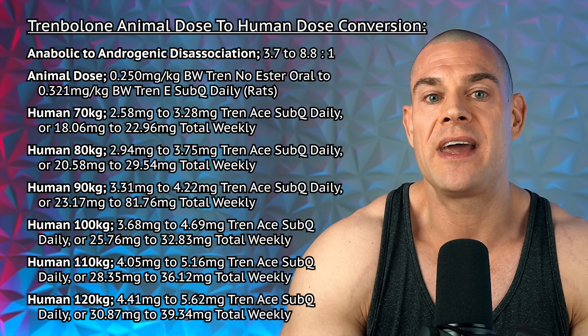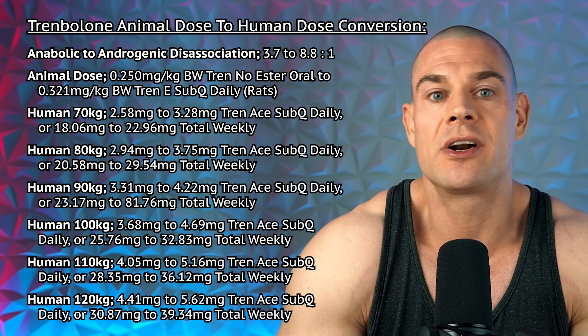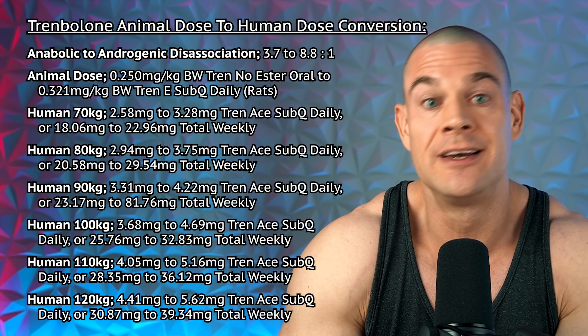A low dose of trenbolone based on body weight might not yield an androgenic effect if you're worried about the prostate or other tissues. This is more scientific evidence — albeit dubiously extrapolated from animal models — that with trenbolone, less is more, and more trenbolone just means more androgenic side effects. For a 100 kg human running 50 mg to 75 mg trenbolone acetate weekly, the anabolic to androgenic dissociation is approximately 2 to 1 — so a low and effective dose of trenbolone is about twice as anabolic as androgenic.